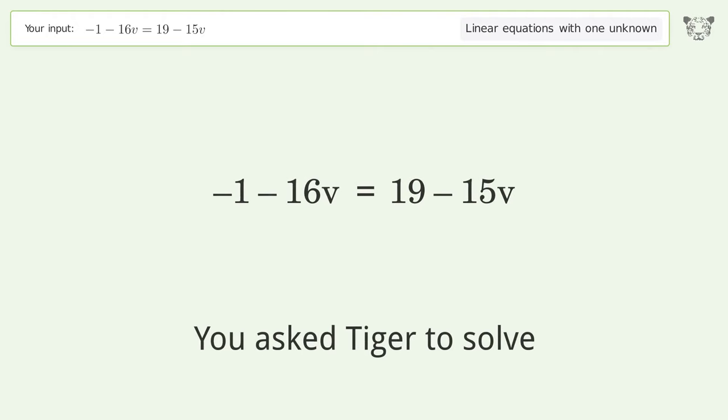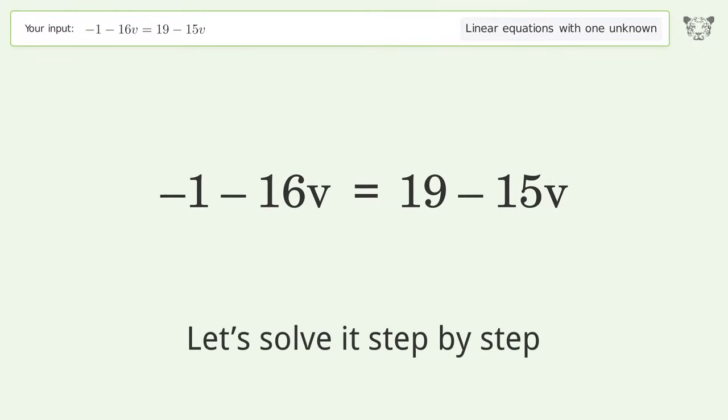You asked Tiger to solve. This deals with linear equations with one unknown. The final result is V equals negative 20. Let's solve it step by step.